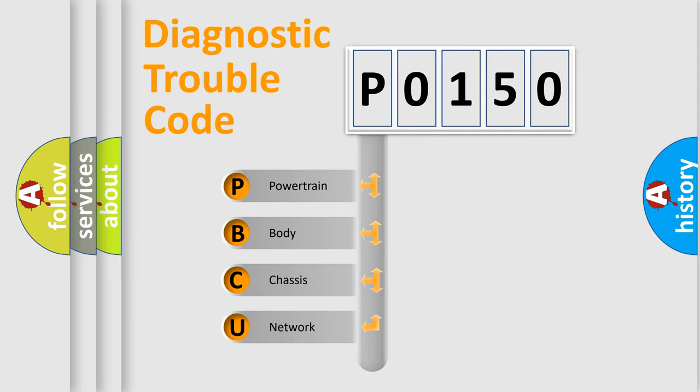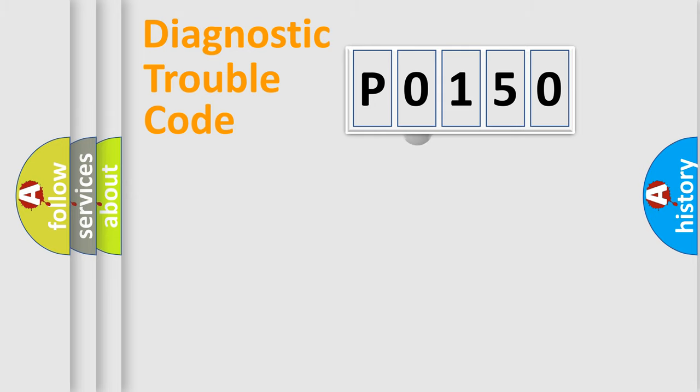We divide the electric system of automobile into four basic units: Powertrain, Body, Chassis, and Network. This distribution is defined in the first character code.